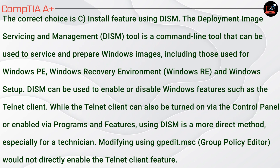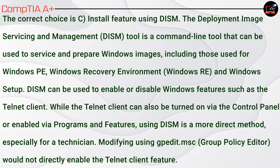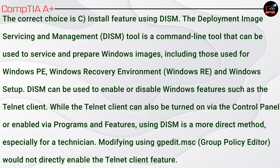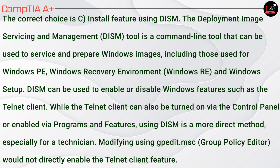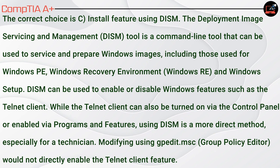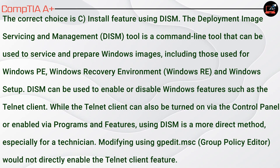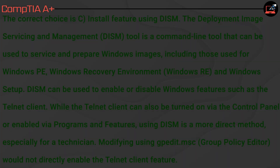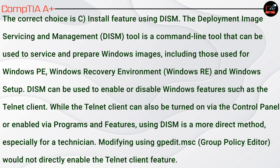The correct choice is C. Install Feature Using DISM. The Deployment Image Servicing and Management tool is a command-line tool used to service and prepare Windows images, including Windows PE, Windows Recovery Environment (WinRE), and Windows Setup. DISM can be used to enable or disable Windows features such as the Telnet Client. While the Telnet Client can also be turned on via the Control Panel or enabled via Programs and Features, DISM is a more direct method, especially for a technician. Modifying using gpedit.msc would not directly enable the Telnet Client feature.